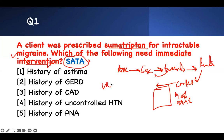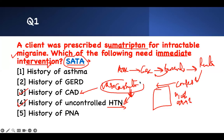Sumatriptan is a vasoconstrictor. Therefore, any problem that involves vasoconstriction is bad. Hypertension — it's going to worsen your hypertension. If you have coronary artery disease, it's going to cause the coronary artery to constrict and cause ischemia. Because of that, you should not give sumatriptan to those patients. This is what I know based on my content. Looking at the answer choices: bronchospasm involves a different mechanism — not picking it. GERD has nothing to do with vasoconstriction — not picking it. Pneumonia is also unrelated. The two contraindications are uncontrolled hypertension and coronary artery disease.